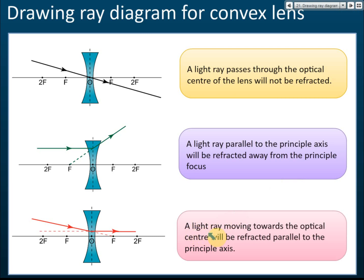Rule number three: a light ray moving towards the principal focus — after refraction it will be parallel to the principal axis. So the light ray moves toward the principal focus and after refraction it becomes parallel to the principal axis. These are the three rules to draw the ray diagram.